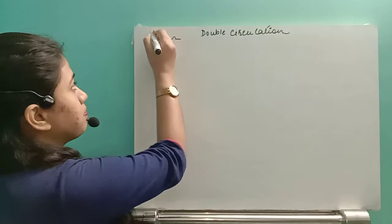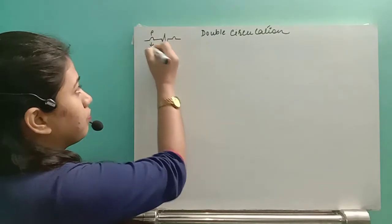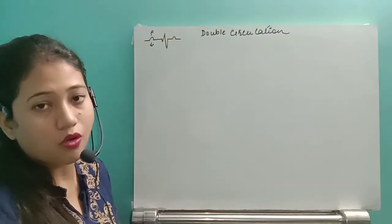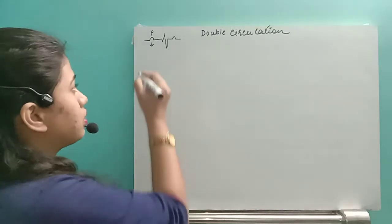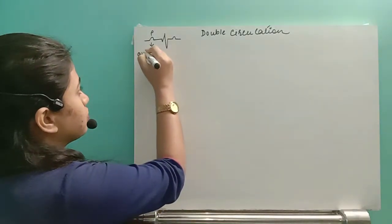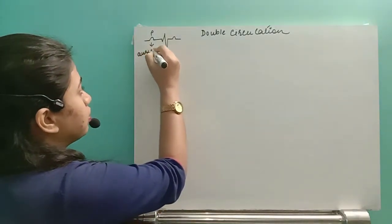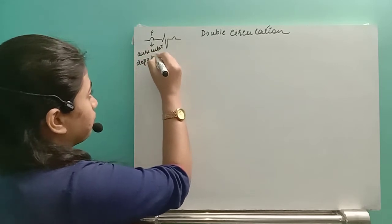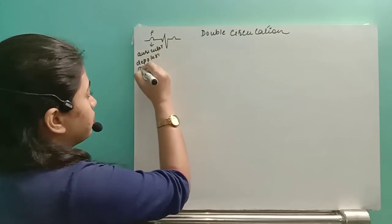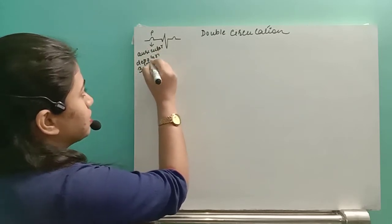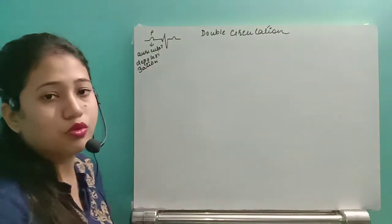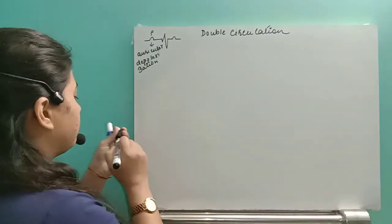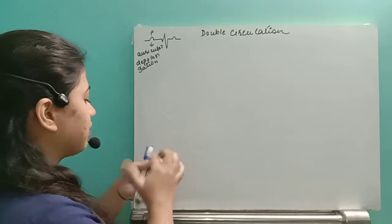First of all, the P wave — what I have told you is that the P wave indicates auricular contraction, also known as auricular depolarization. Auricular depolarization means it is a state when both the two auricles contract.